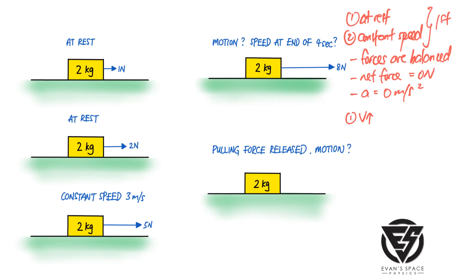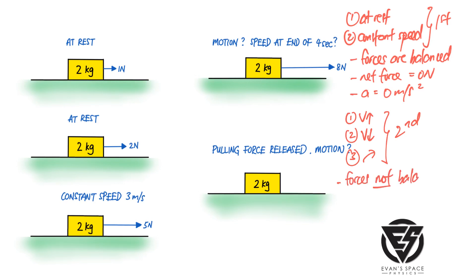Whenever an object is going faster and faster — the speed increases, it's accelerating — or if the object is slowing down, it's decelerating, or the third scenario where the object is going around a bend or circle and direction changes, these three scenarios belong to Newton's second law. The forces are not balanced, so there will be a resultant or net force acting on the body, causing the object to have acceleration.